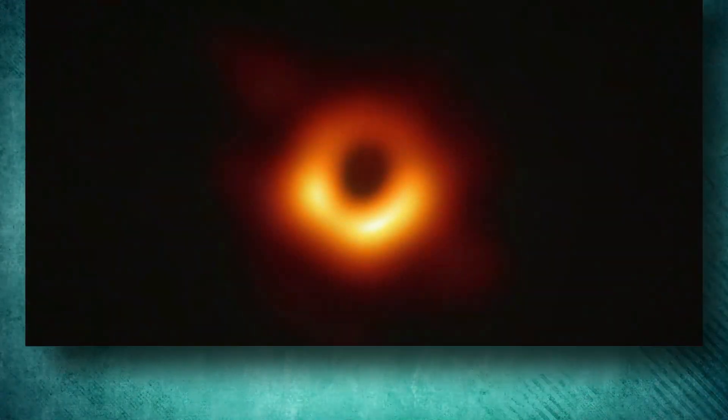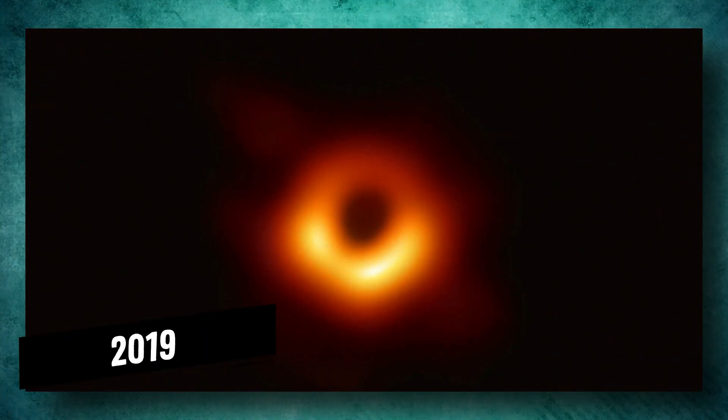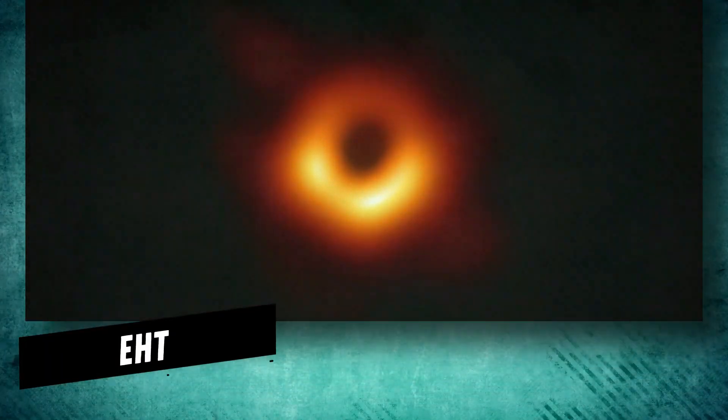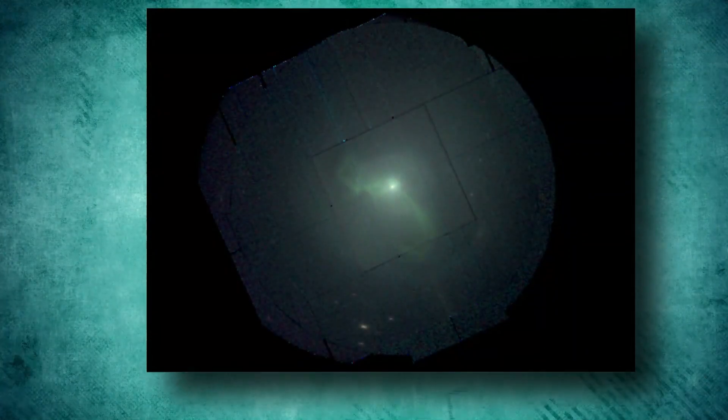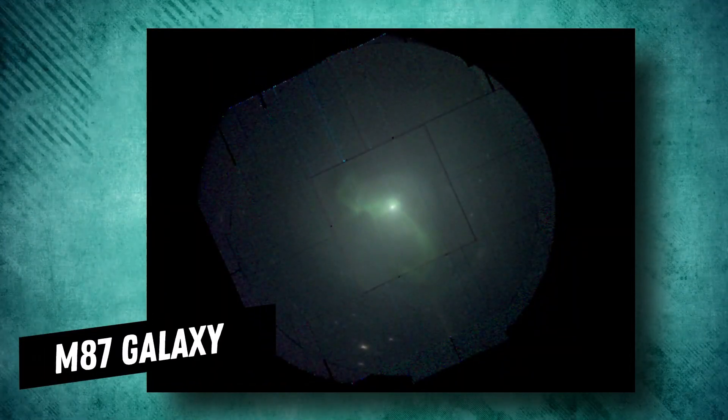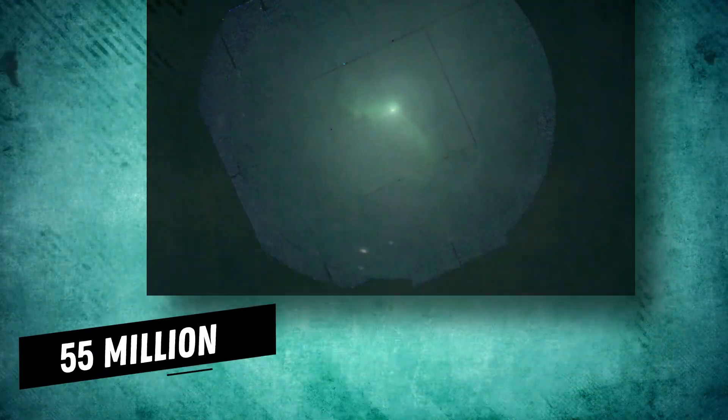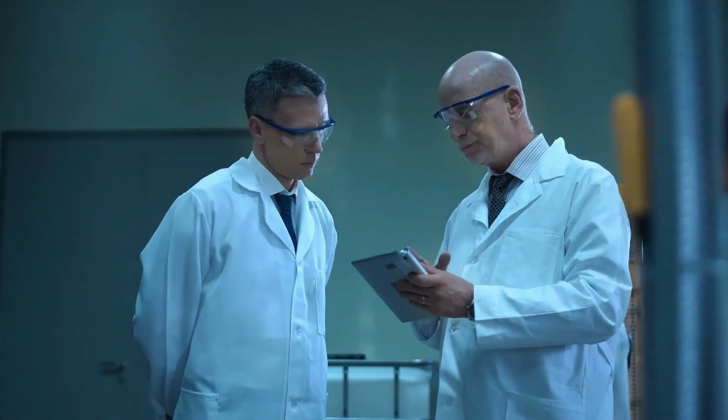The first image of a black hole was captured in 2019 by the Event Horizon Telescope, EHT, collaboration. The striking photo of the black hole at the center of the M87 galaxy 55 million light-years from Earth thrilled scientists around the world.